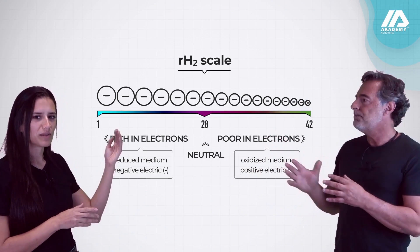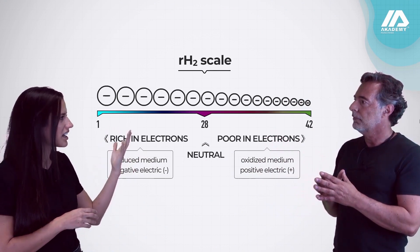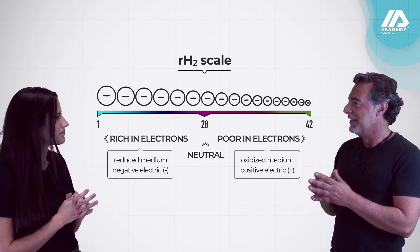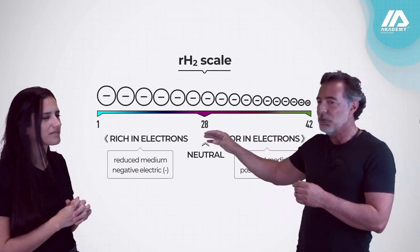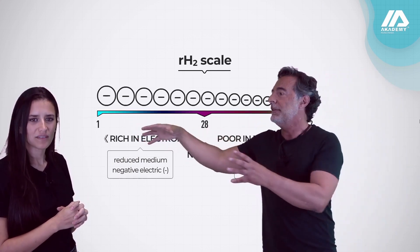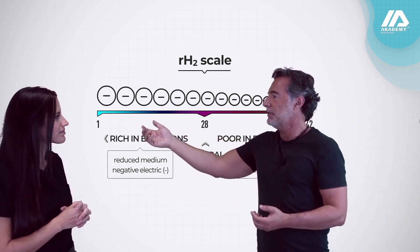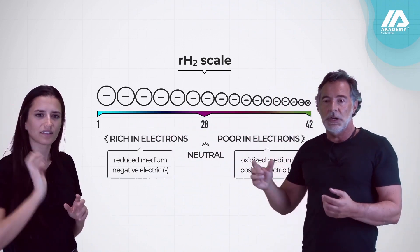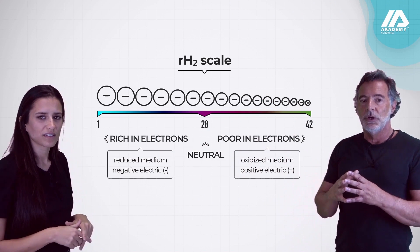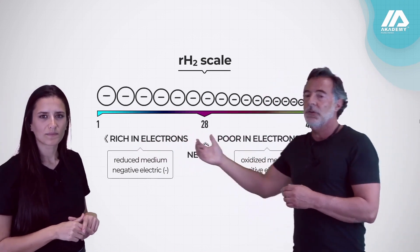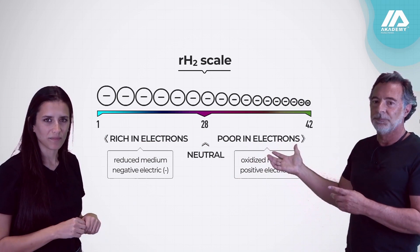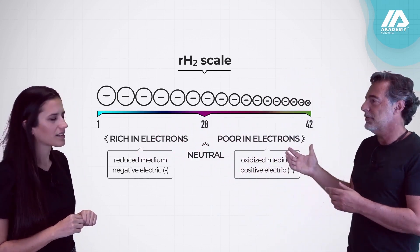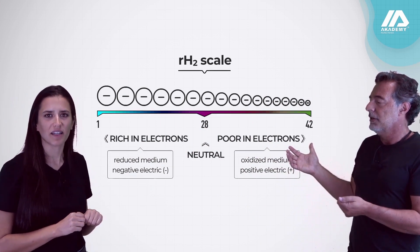So what do you have when the RH2 is above 28? As you can see in our scale, we have more electrons here and less here. In the chemical view, we have rich electrons there and poor electrons here. So you have a reduced environment there and an oxidized medium on the other side.